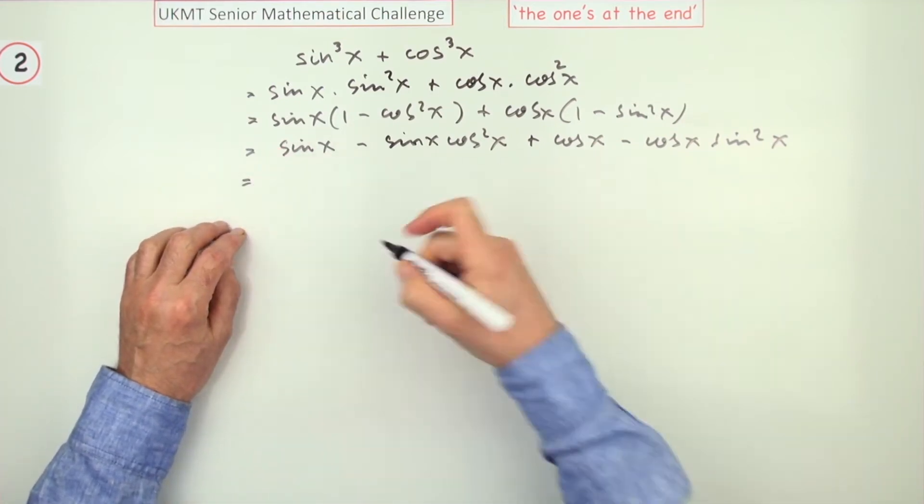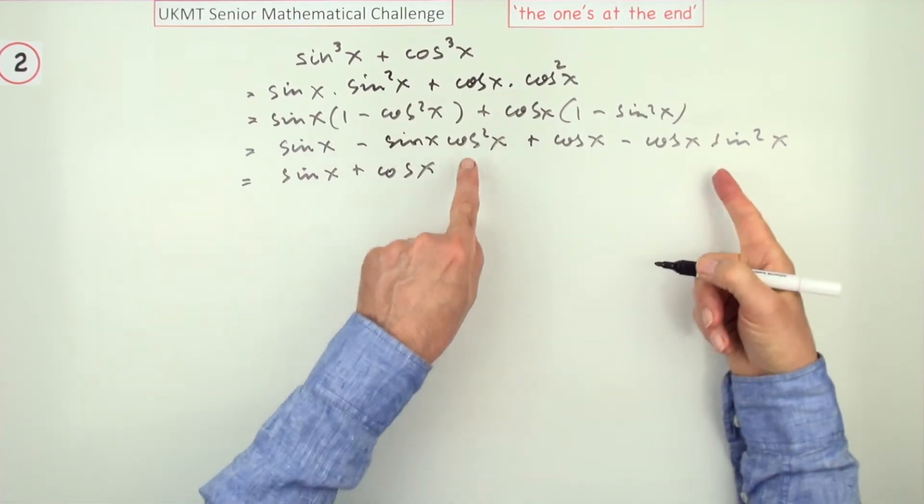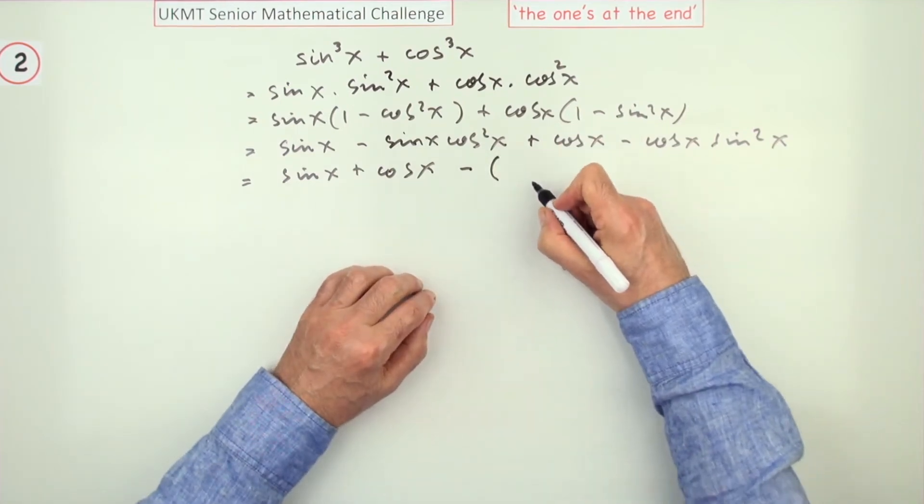Well, I think first of all, I'll put those two together. So I've got sine x plus cos x, and then those two I've got minus. And since they're the same, I'll just put them in a little bracket.